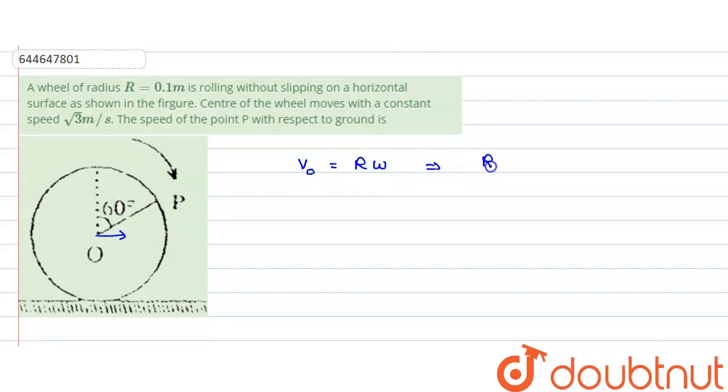What does it mean? It means that R omega would be equals to root 3 meter per second. Now, if a person is standing on the ground, what he will be seeing? He will be seeing the velocity of V.